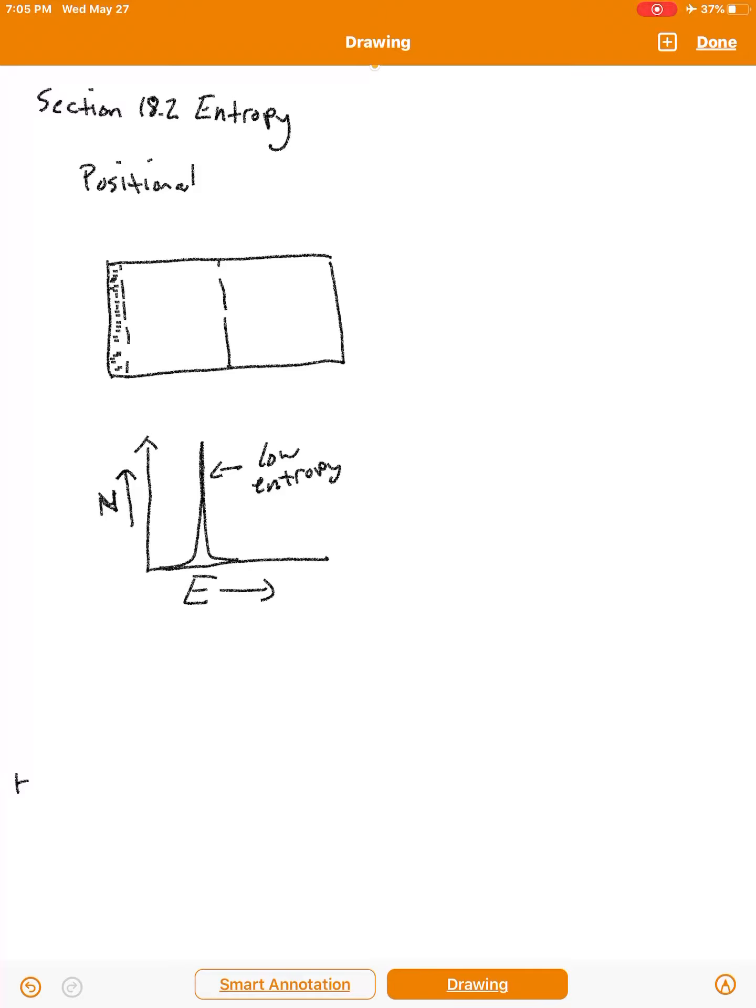But now suppose I open up this first little doorway here and then suddenly those molecules expand into a larger volume. Now what would happen is the dispersion of this energy would become much more broad. So there would be all kinds of energies that these molecules could exist at. So what we're doing is we're tracking their positions but relating that to energy because they're in some sense connected to each other.